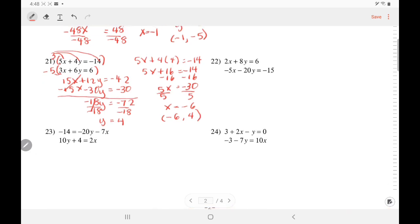In number 23, it is not even in the right order. So we want to move the x and the y to the left side for the first equation so that they are in the same order as the rest of these problems. So I'm going to add the 20y and add the 7x to the left side. So I would have 20y plus 7x. I'm going to add the 14 to the right side. Now we want to arrange them such that the x term is first. So I'm going to rewrite the 7x plus 20y equals 14.